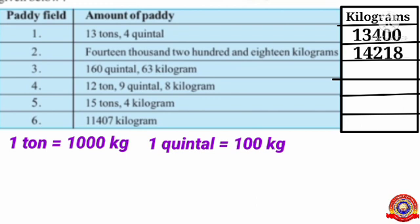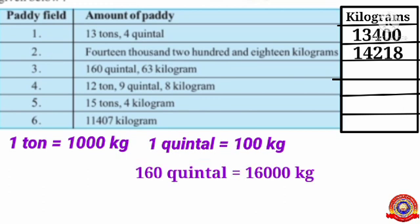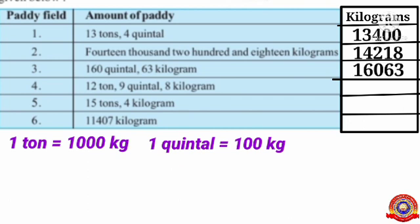The second field got 14,218 kilograms of paddy. The third field got 160 kindle and 63 kilograms of paddy. You know that one kindle equals 100 kilograms, so 160 kindle equals 16,000 kilograms. Total: 16,000 kilograms plus 63 kilograms equals 16,063 kilograms.